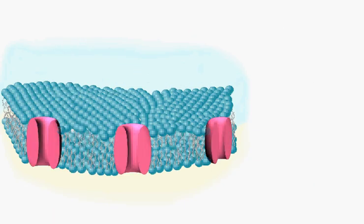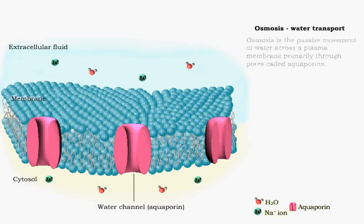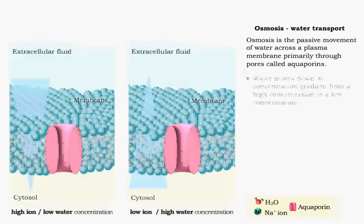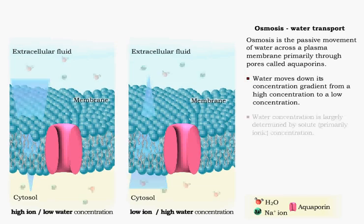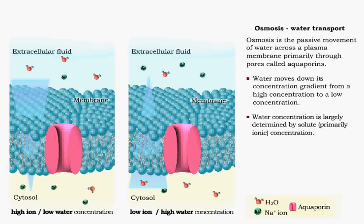Water passes in and out of a cell, primarily through pores called aquaporins. During osmosis, water, like ions, will move down its concentration gradient. The concentration gradient of water is, to a large degree, determined by the fluid's solute concentration.